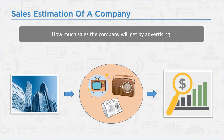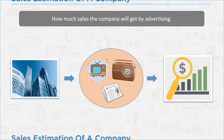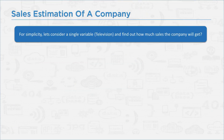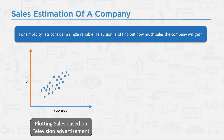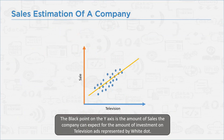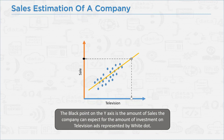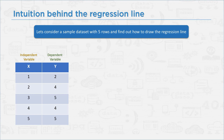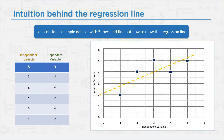For simplicity, let's consider the single variable — television — and find out how much sales the company will get. Our goal is to calculate how much sale our company will get by advertising a certain amount on television. First, we are going to plot the data between television and sales from the previous data. After plotting the graph, we find the best fit regression line. The black point on the y-axis is the amount of sales the company can expect from the amount of investment on television ads represented by the white point.